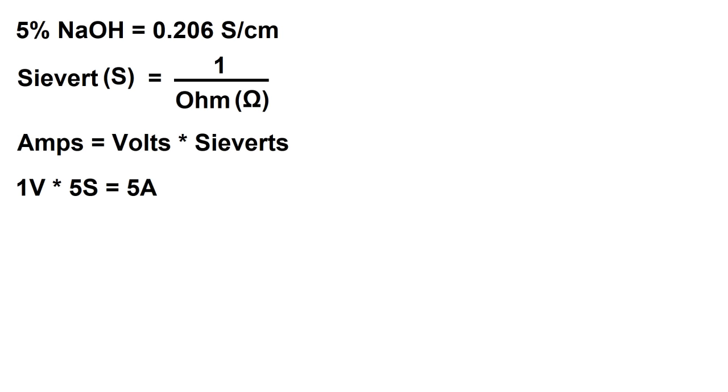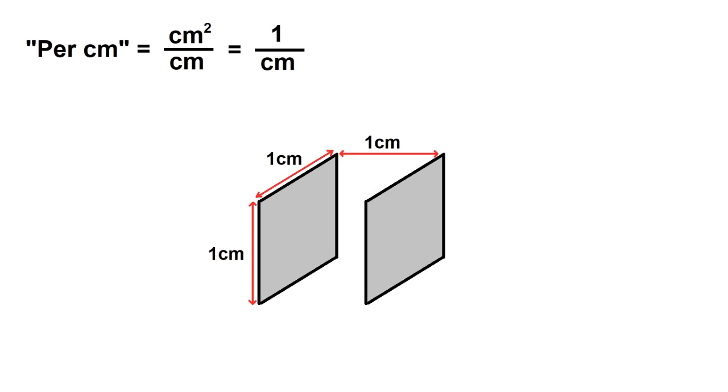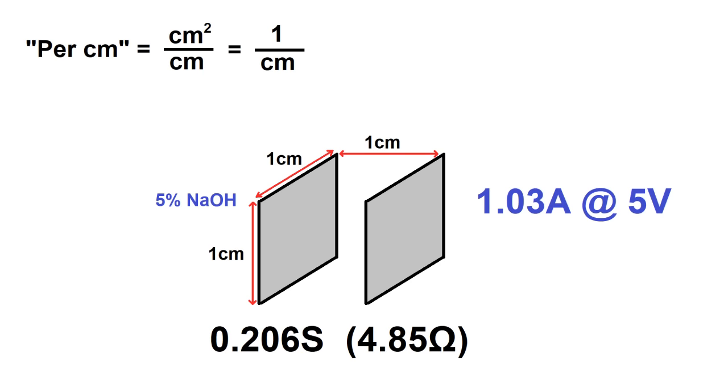A siemens is the inverse of an ohm. So for example, 1 volt at 5 siemens would give 5 amps, 1 volt at 10 siemens would give 10 amps, 2 volts at 10 siemens would give 20 amps, and so on and so forth. The per centimeter part is area over distance. In other words, two 1 centimeter squared plates that are 1 centimeter apart in a 5% sodium hydroxide solution would give 0.206 siemens, so in theory that's a little over 1 amp at 5 volts.